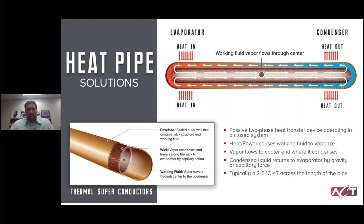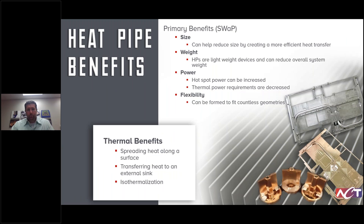That pressure gradient pushes heat from the evaporator to the condenser zone, where it gives up its latent heat, condenses back into a liquid, and is captured within the wick structure. The wick lines the inside diameter and creates a passive capillary force that pumps fluid back from the condenser to the evaporator. The result is no moving parts, a highly reliable system, very high heat transfer coefficients, and typically a two to five degree temperature difference end to end.